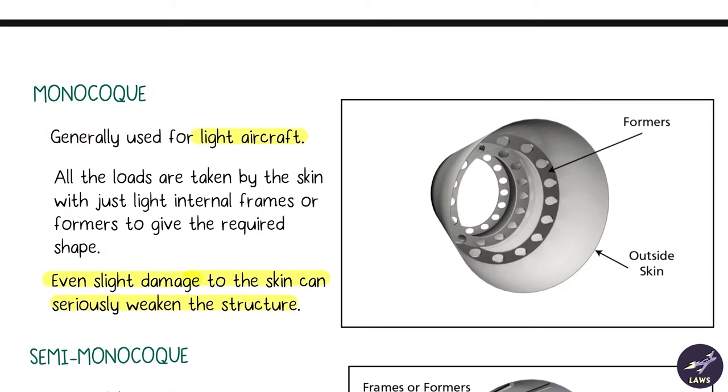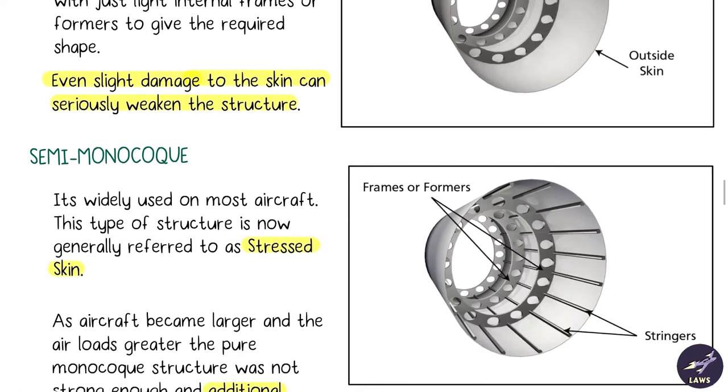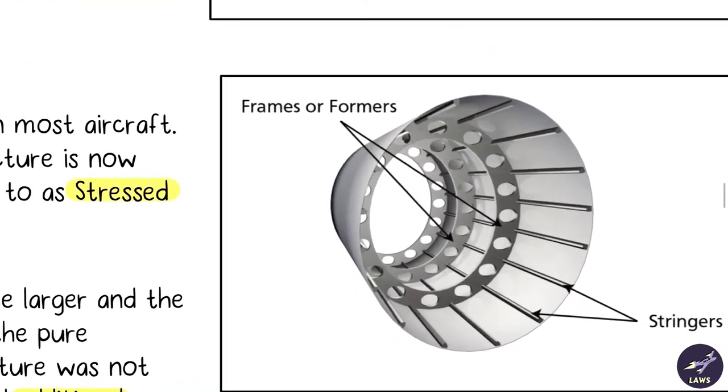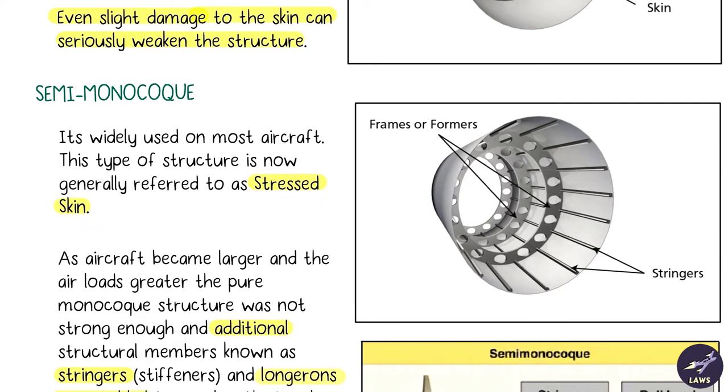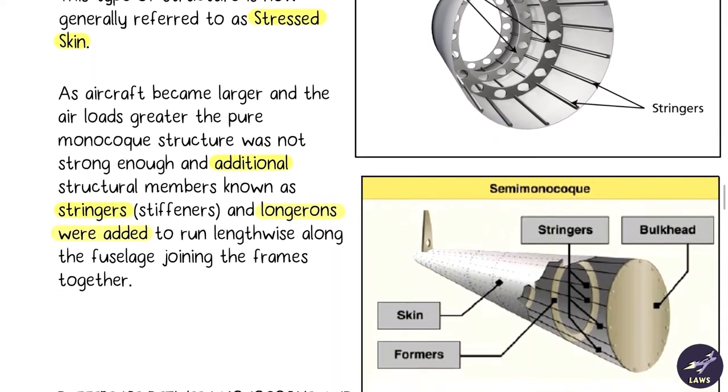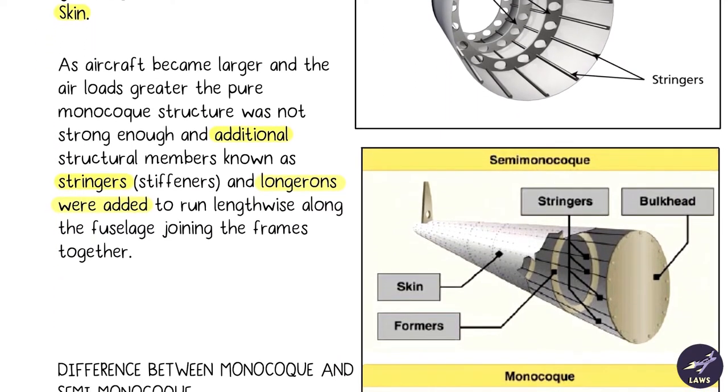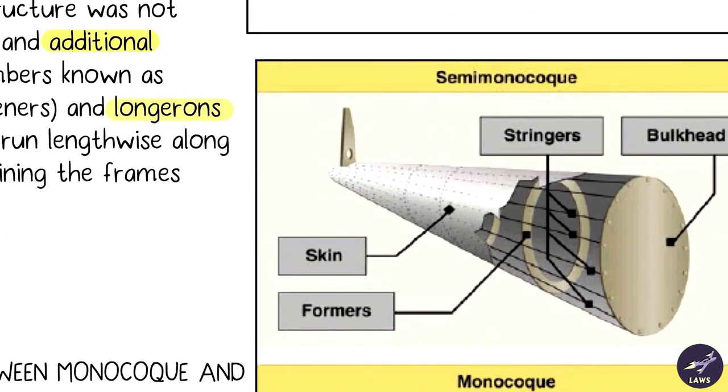The improvement is a semi-monocoque structure. In this case, we add stringers which strengthen your skin. This is called stressed skin and additional members like longerons are also used. Longerons start from the nose and go till the tail. These are the structural members we use in a semi-monocoque structure.